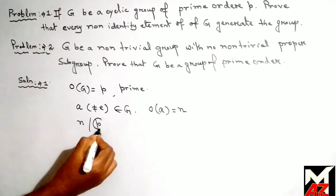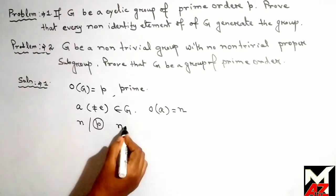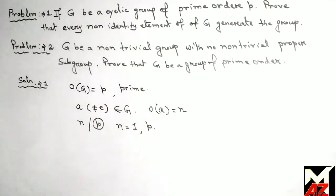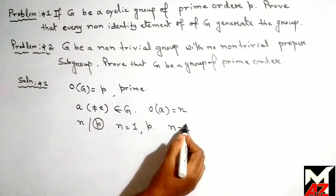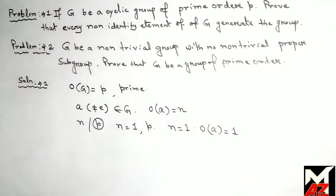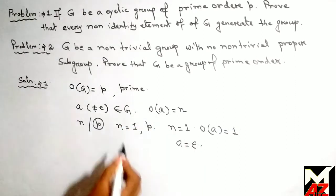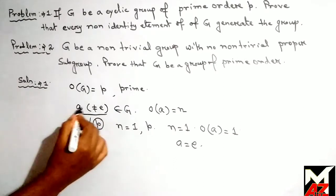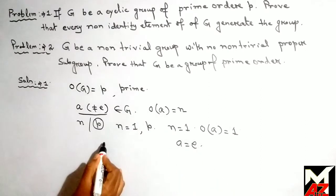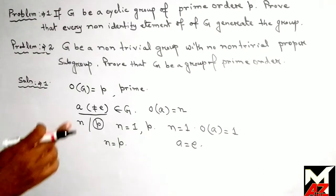Since p is prime, either n equals 1 or n equals p. But if n equals 1, that is if the order of a equals 1, then we must have a equal to e. But we have a not equal to e, so the only option remaining is that n equals p.